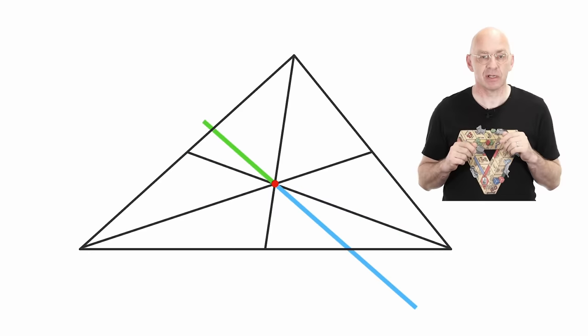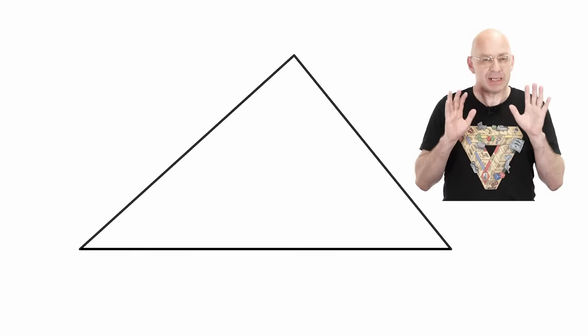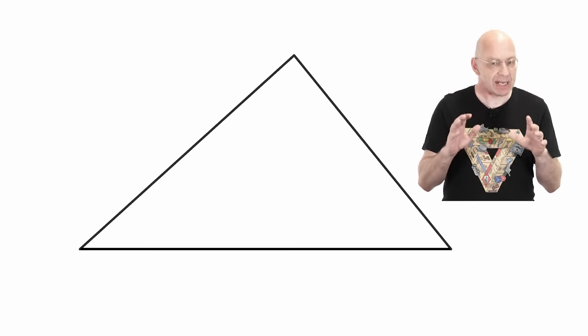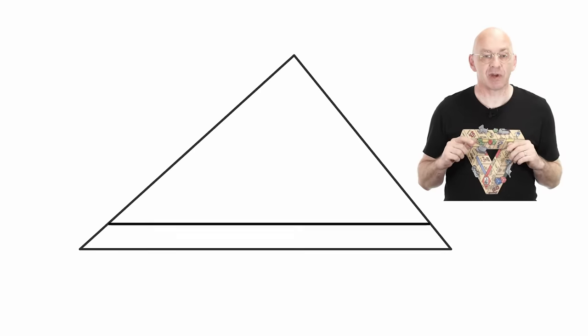The blue is always twice as long as the green. There, blue is twice as long as the green. And again, blue is twice as long as the green. Here's a nice way to see why all this is the case. Scaling our triangle down by a factor of 3 gives this little triangle.